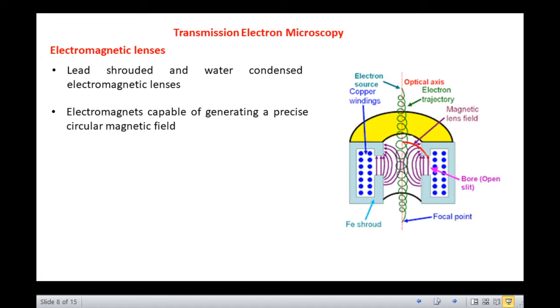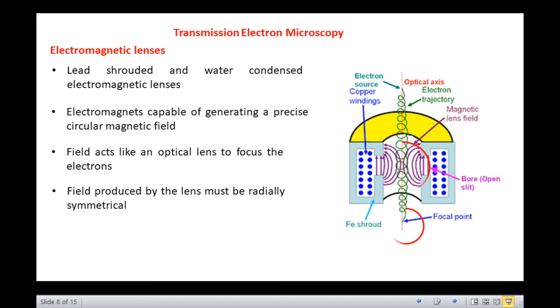The field acts like an optical lens to focus the electrons. The field produced by the lens must be radially symmetrical, as deviation from radial symmetry causes aberrations like spherical and chromatic aberrations, similar to what we have studied for optical lenses. The lenses are made up of iron, cobalt, or nickel alloys.